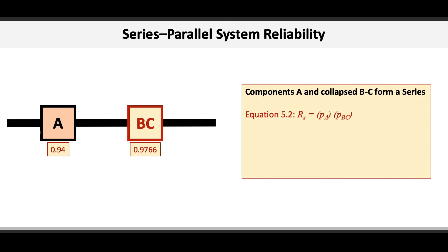So RS, or the reliability of the system, is equal to 0.94 times 0.9766, which equals 0.918. Thus, we can conclude that the reliability of this series-parallel system is 91.8%.